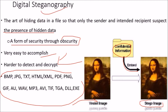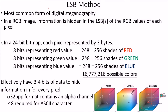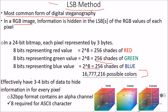The LSB (Least Significant Bit) method is the most common form of digital steganography. In a 24-bit RGB image, information is hidden in the least significant bit of the RGB values of each pixel. Each pixel is represented by 3 bytes: 8 bits for red (256 shades), 8 bits for green (256 shades), and 8 bits for blue (256 shades). This gives effectively 3 to 4 bits of data available to hide information in for every pixel.